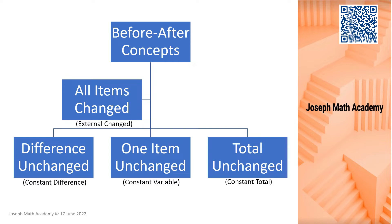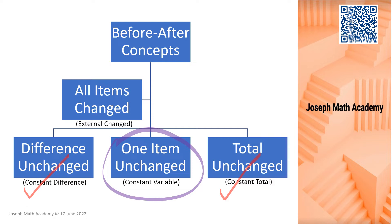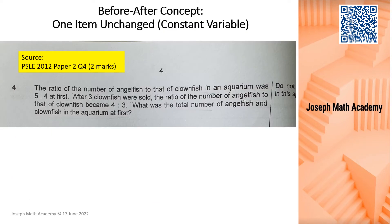This is the outline. First and foremost, I have previously shared with you one item unchanged and total unchanged. Today we're going to move on to one item unchanged, and in a separate video I will be talking about all items changed. For today's discussion question, it's taken from PSLE 2012 Paper 2 Question 4 — a 2-mark question.